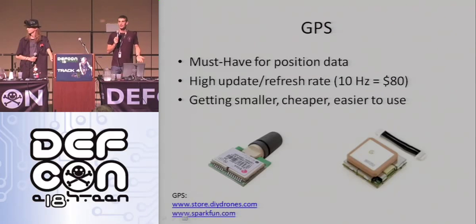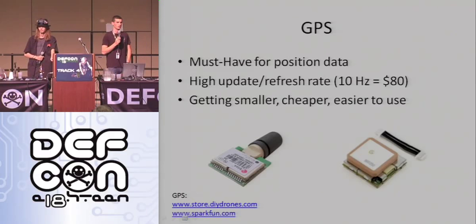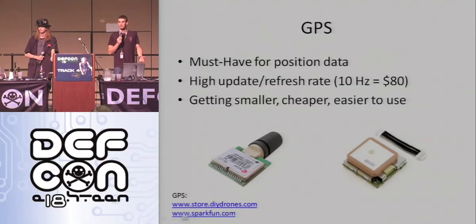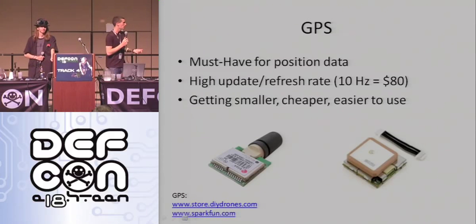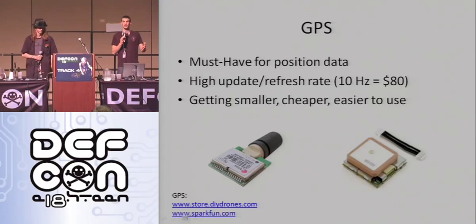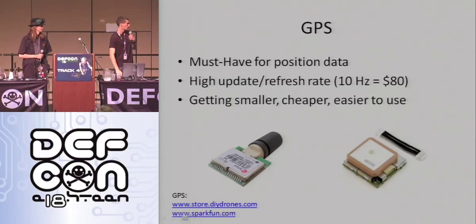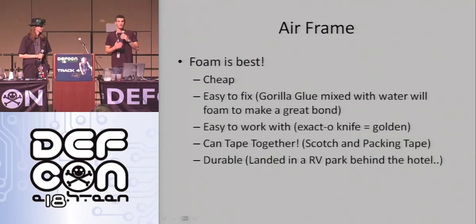GPS: the plane obviously needs to know its current location. Many of our phones now have GPS receivers, so you can imagine how small they've gotten. What you see here are high-end GPS devices that literally fit in the palm of your hand, about the size of a quarter each. They offer a 10 Hz refresh rate with 2 to 3 meter resolution on average, and the GPS receiver will only cost you about $80.